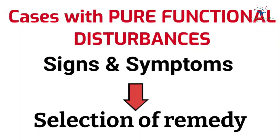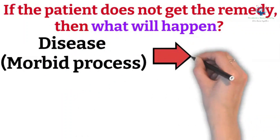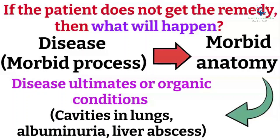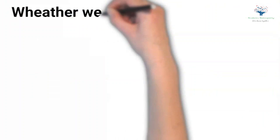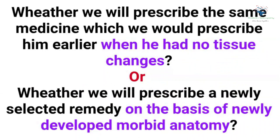Kent further proceeds to say that if the patient does not get the remedy, then definitely the disease or morbid process will progress and lead to morbid anatomy. This time the patient will return with disease ultimates or organic conditions like cavities in the lungs, albuminuria, liver abscess, etc. Now, the million dollar question is: whether we will prescribe the same medicine which we would have prescribed earlier when there were no tissue changes, or whether we will prescribe a newly selected remedy on the basis of newly developed morbid anatomy? It is a very important point for everyday clinical practice which Kent has explained next.